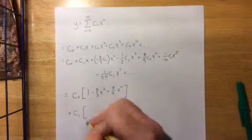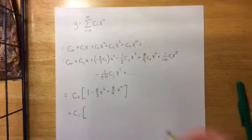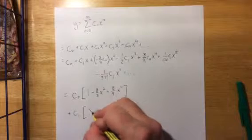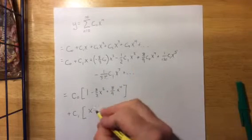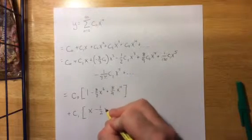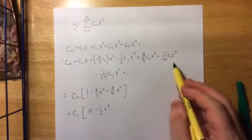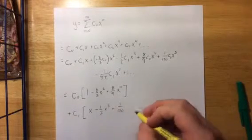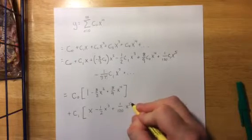Then we'll also group together everything that had a c₁ in it for our second linearly independent solution. So we have a c₁ times x, we had a c₁ times -1/2 x³, we had a c₁ times 1/120 x⁵.